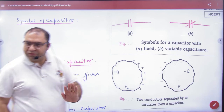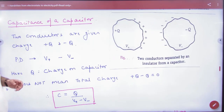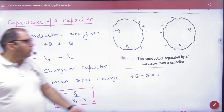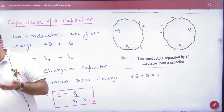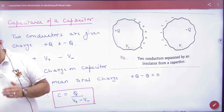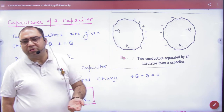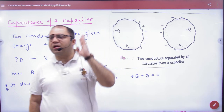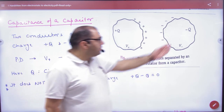Next is capacitance of a capacitor. If you have a capacitor — a conductor — and you charge this conductor, it will store that charge. This is a positive charge. According to the principle of the capacitor, you need to keep a conducting plate nearby, so I have kept a conducting plate and shown it accordingly.